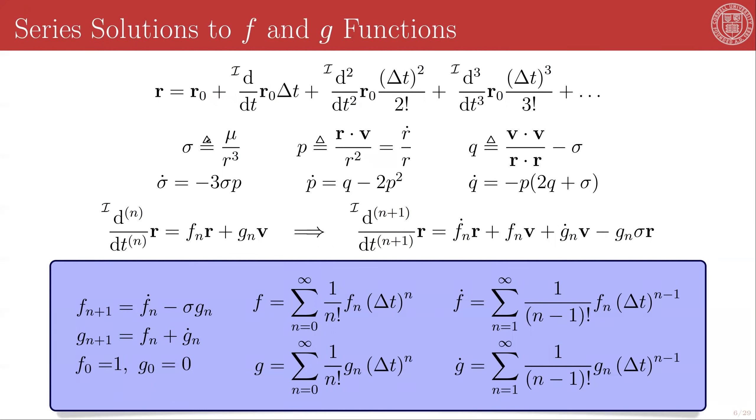And these are known as series solutions to the f and g functions. We are going to define a variable sigma as the gravitational parameter divided by r cubed. And remember, r here represents the orbital radius magnitude at the final time, at t plus delta t. And we're going to define a quantity p, not to be mistaken for the focal parameter, as r dotted into v, again at the final time, divided by r squared, which is exactly the same as r dot over r. The easiest way to see this is just to plug in the component forms of these two vectors. So let's very quickly verify this.